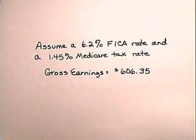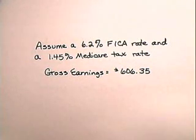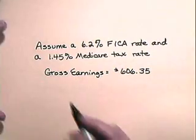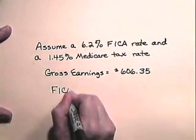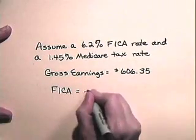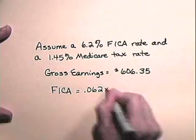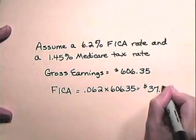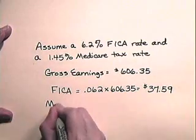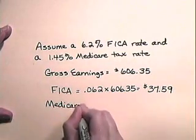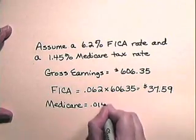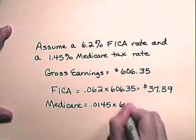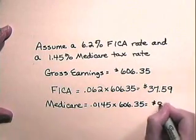Now let's look at this example. Assume a 6.2% FICA rate and a 1.45% Medicare tax rate, and let's determine the FICA tax and the Medicare tax on gross earnings of $606.35. The FICA tax will be 6.2% (0.062) times $606.35, which is $37.59. And the Medicare tax will be 1.45% (0.0145) times $606.35, which is $8.79.